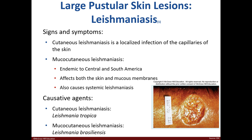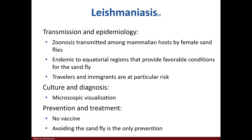Leishmaniasis is an infection that targets the capillaries of the skin in the cutaneous form. It may also affect the skin and mucous membranes and can lead to a systemic infection. The causative agents are organisms from the Leishmania genus. The mode of transmission is through the bite of a sandfly. It can be diagnosed by microscopic means. There is no vaccine, and avoiding the fly with nets or sprays is the only prevention.